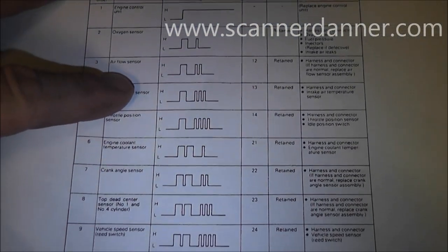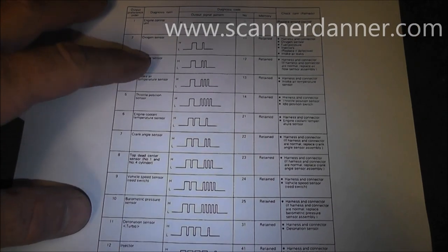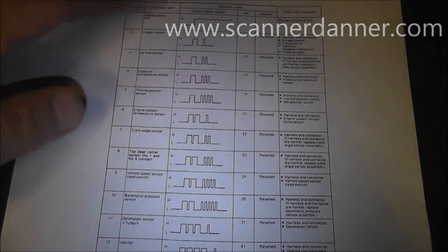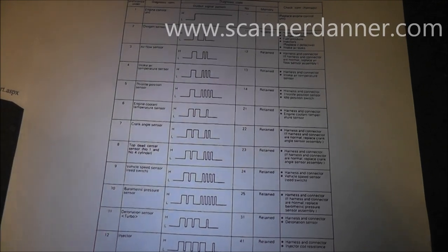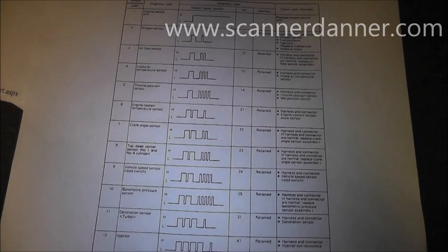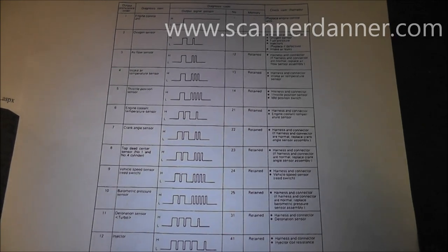If there's multiple codes, the way this system is designed is it will start with the lowest code and then report to the next one in numerical order. And if the code just simply repeats itself over and over, then there's only one code in memory.